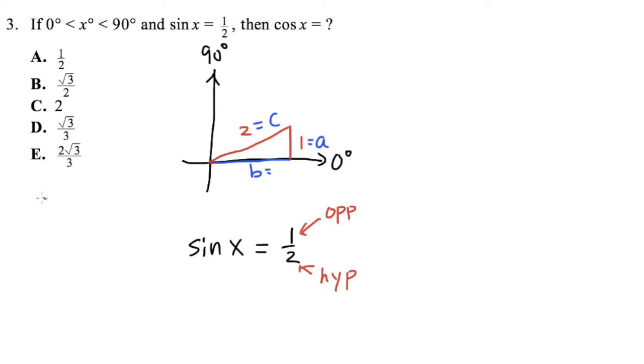The Pythagorean theorem tells us that a² + b² = c². A is 1, so I can plug in 1² plus b². This equals c², and c is 2, so we have 2². We need to solve for b. This gives us 1 + b² = 4. Subtract 1 from both sides, so b² = 3.